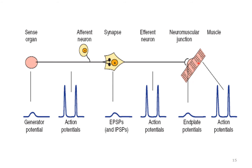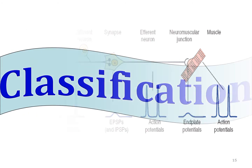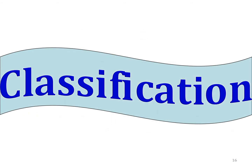The generator potential, receptor potential, end plate potential, EPSP, and IPSP are all examples of local potentials. Action potential is always an action potential. So from the recognition of the stimulus right through to the response — this involuntary response to a stimulus is called a reflex. All the components shown in the pathway are components of the reflex arc. This is all about the basic introduction of the reflex. Next we will cover classification.